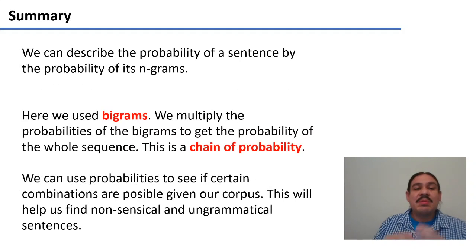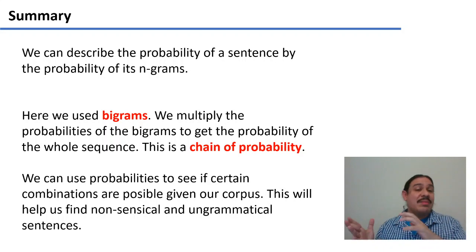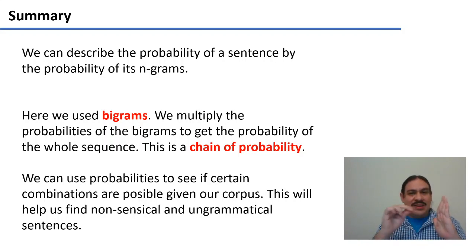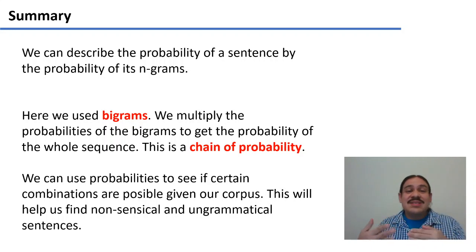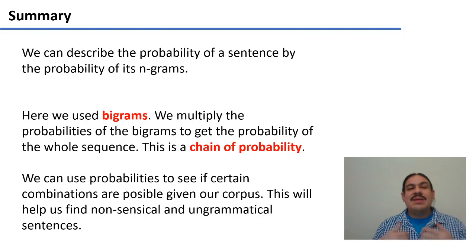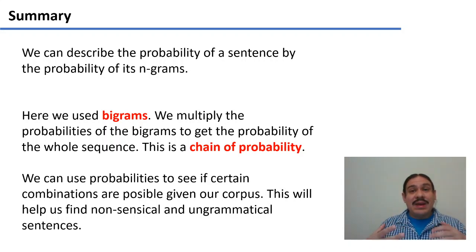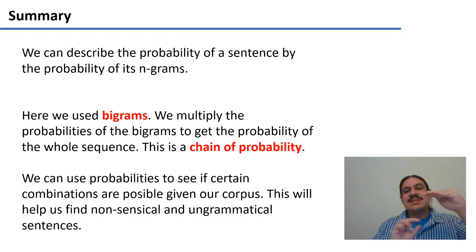In summary, we can describe the probability of a sentence using the probability of its sub-n-grams. Here we used bigrams, multiplying the conditional probabilities to form a chain that describes the sentence. We can use these probabilities to identify good sentences like 'I am Sam,' as well as nonsensical or ungrammatical ones like 'I am fuff' or 'fuff am I.' In the next couple of videos, we'll see more examples of these techniques and a way to distinguish between good, bad, and unusual-but-admissible sentences — this is going to be called smoothing.